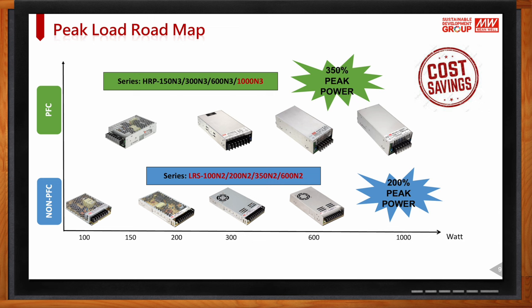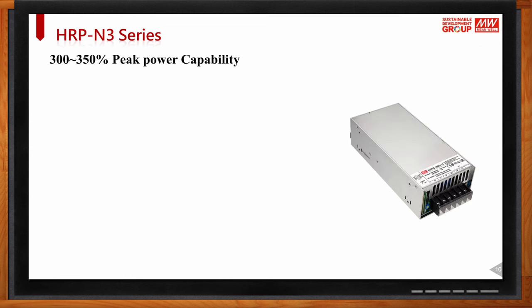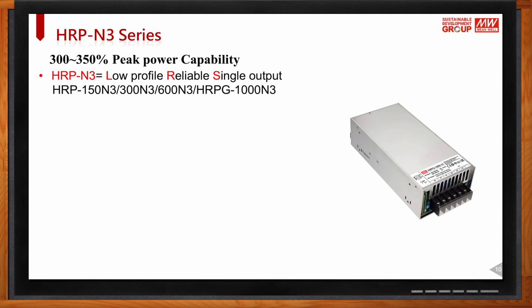So the HRP can be overloaded 3.5 times its rated output power for five seconds. For the LRS series, we offer N2 which is 200% — for example, a 100W power supply can be overloaded to 200W for five seconds in the same form factor. The HRP comes with PFC (power factor correction) from 150W up to 1000W. The LRS comes without PFC, making it more economical. For customers needing power factor correction, the HRP is available in 150W, 300W, 600W, and 1000W.